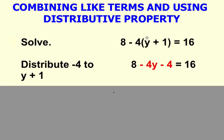Multiply negative 4 by y and you get negative 4y. Multiply negative 4 by positive 1 and you get negative 4.